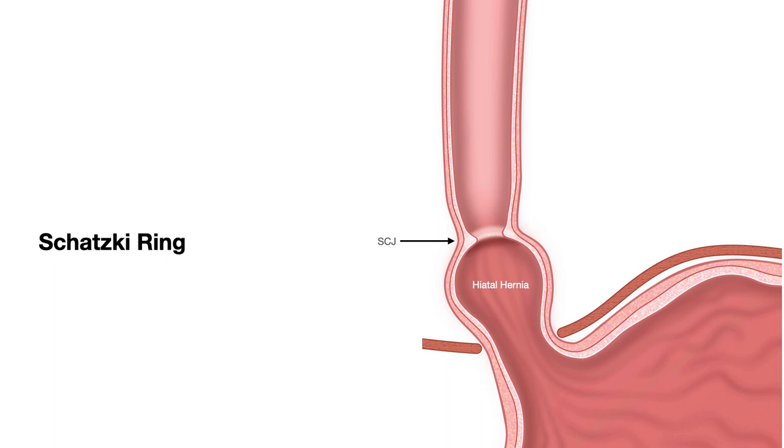The ring is covered on the upper surface by pink squamous lining and on the lower surface by beefy red columnar lining.